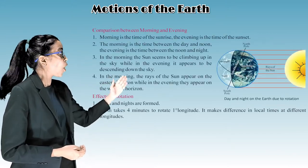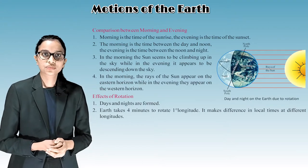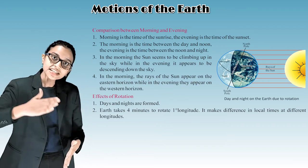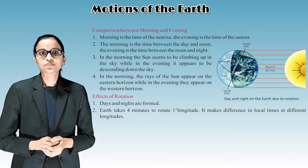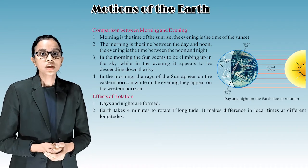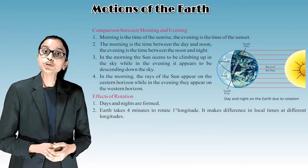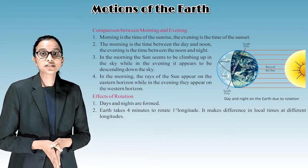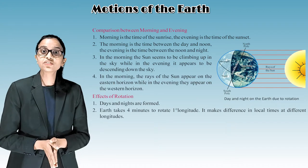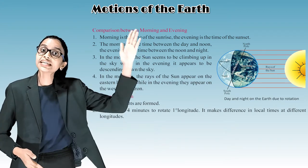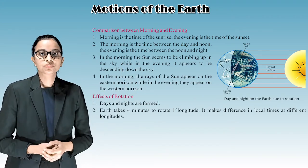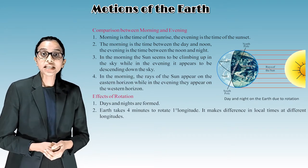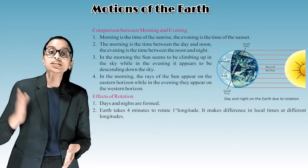Comparison between morning and evening: First, morning is the time of sunrise while evening is the time of sunset. Second, morning is the time between dawn and noon, while evening is the time between noon and night. Third, in the morning the sun seems to be climbing up in the sky, while in the evening it appears to be descending. Fourth, in the morning the rays of the sun appear on the eastern horizon, while in the evening they appear on the western horizon.